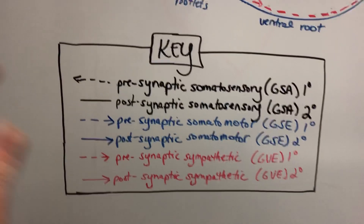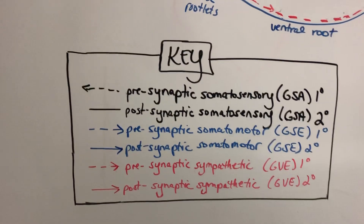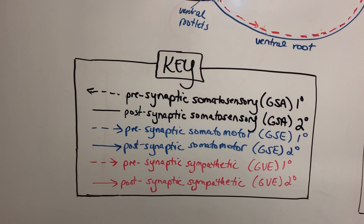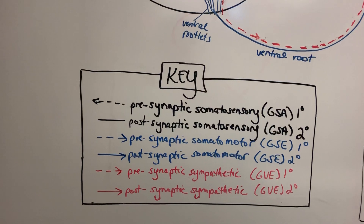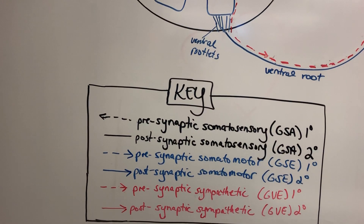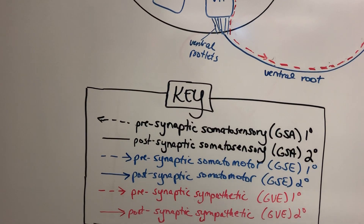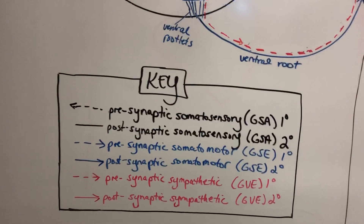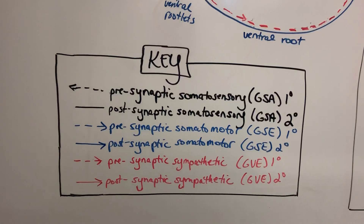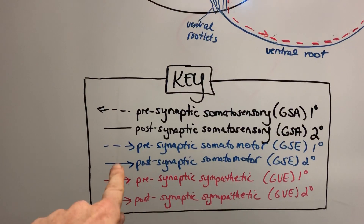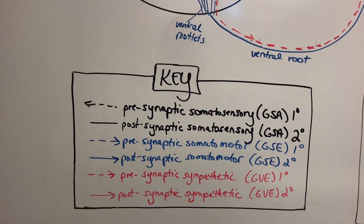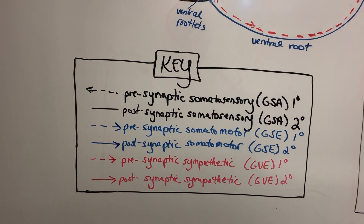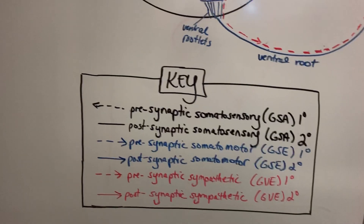The dotted line in blue — it's a lighter shade than the top one — has the arrow going to the right, assuming this is efferent. This is presynaptic somatomotor, which never utilizes a ganglion at any time, and synapses on a nucleus. This nucleus today will be called the ventral horn, and this is our general somatic efferent primary pathway — our first order. The solid line will be a nucleus starting there and then heading out through ventral rootlets, ventral roots, and spinal nerve.